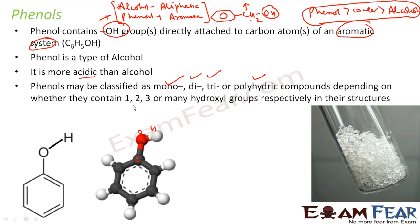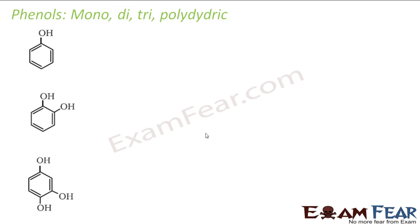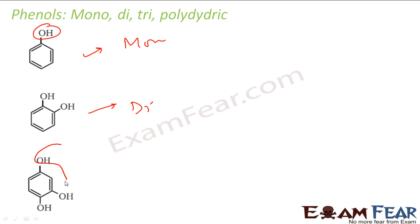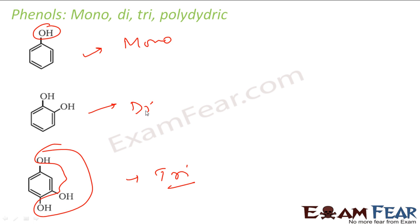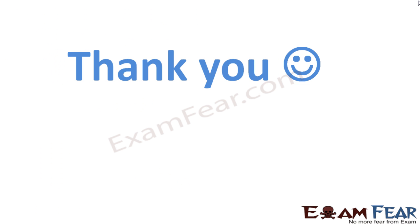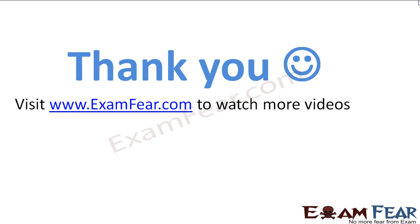Similarly, phenols can also be classified as monohydric, dihydric, trihydric or polyhydric compounds depending on the number of hydroxyl groups. For example, a compound with one OH is monohydric, two OH groups is dihydric, and three OH groups is trihydric.